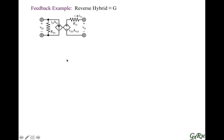Let's do an example. In this example, we have a Norton input and a Thevenin output. This is called a reverse hybrid model, or G-parameter model. We could also have a Norton input and a Norton output, a Thevenin input and a Thevenin output, or a Thevenin input and a Norton output. All these variations are perfectly valid, and the same principle applies. We'll apply it to this example, which can later be used for any other.